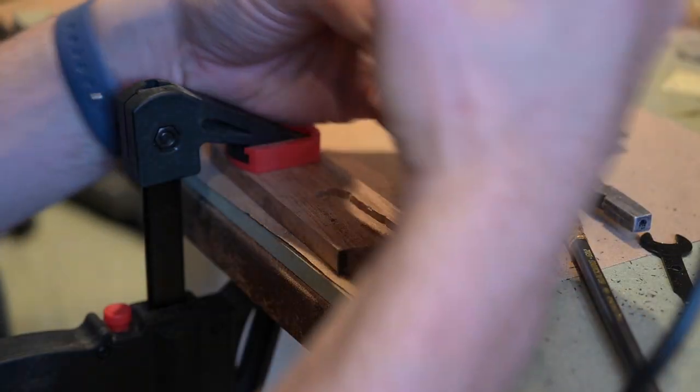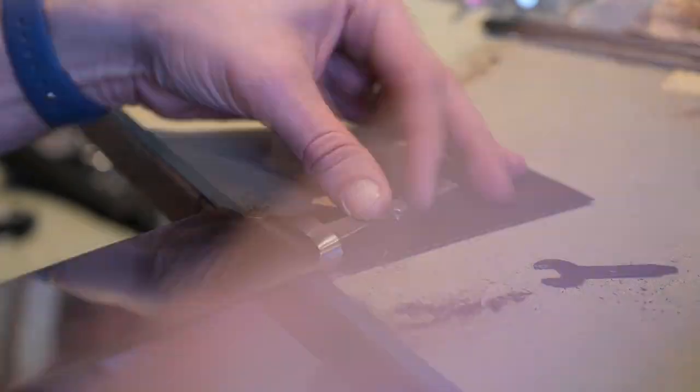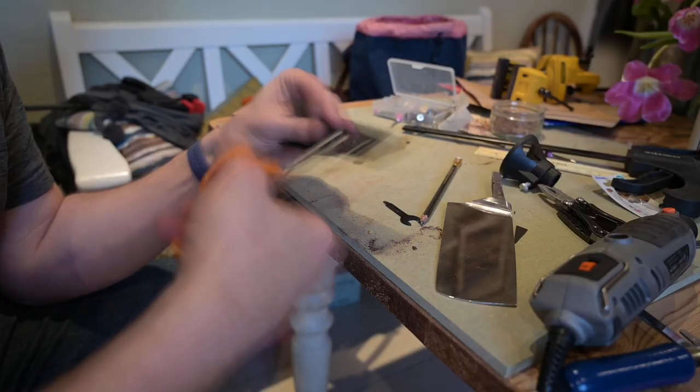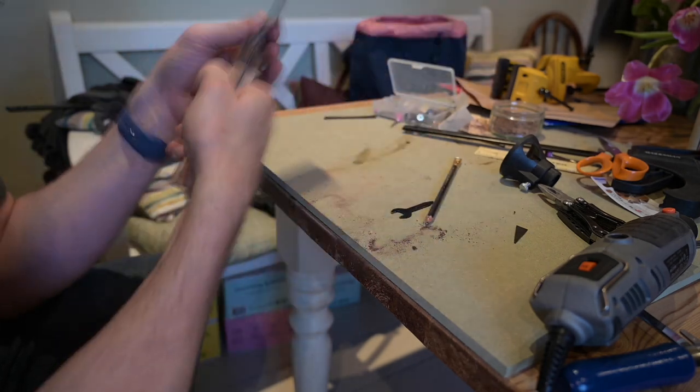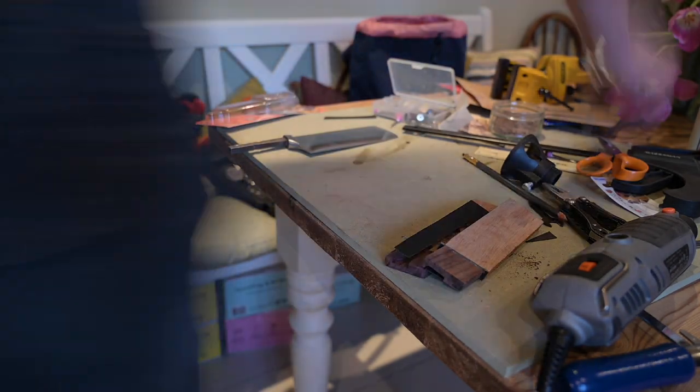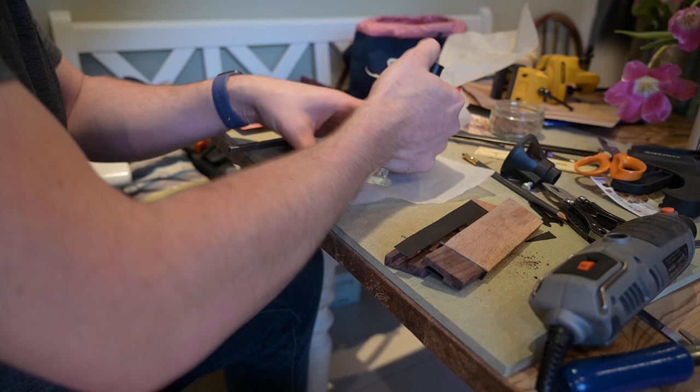I was also just experimenting with all different bits on the rotary tool. Some worked brilliantly, some didn't work quite so well. I'm just cutting out the fiber insert as well to make sure that's going to fit in between the two pieces when I glue everything together.